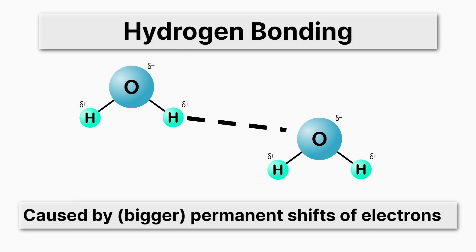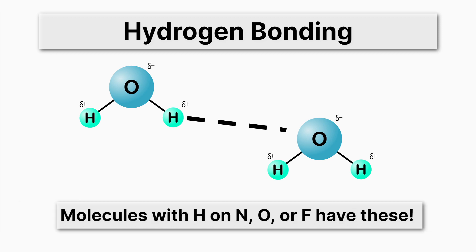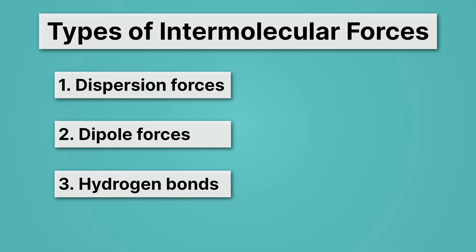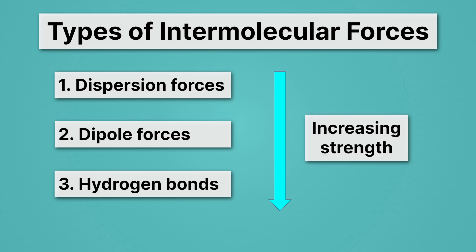Next up and lastly, we have hydrogen bonding. We've already seen an example of hydrogen bonding — whenever we have water molecules, we'll always have hydrogen bonding. They're caused by bigger permanent shifts of electrons, so they're just a special case of dipole forces that are extra strong. How do we identify if something has hydrogen bonds? They're molecules with H on N, O, or F — if you ever have hydrogen on nitrogen, oxygen, or fluorine, you'll have hydrogen bonds. So there are three intermolecular forces: dispersion forces, dipole forces, and hydrogen bonds. As we go down this list they get stronger, so hydrogen bonds tend to be the strongest.